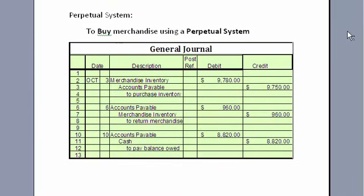The next item is how we record the purchasing of merchandise under a perpetual system. We're not going to use a purchases account — we're actually going to use merchandise inventory. Because this is perpetual with high-dollar, low-volume items, our merchandise inventory will always be accurate. We put all of our money directly into merchandise inventory and do not use the purchase account. If we return some merchandise, we simply back it out of merchandise inventory.